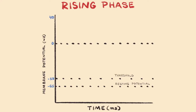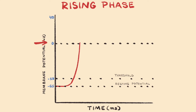The rising phase of the action potential, corresponding with depolarization, begins immediately after the graded potential, or series of graded potentials, reach threshold. During this phase, the membrane potential becomes increasingly less negative in charge, surpasses zero millivolts, and then becomes increasingly positive, up to a charge of about positive 40 millivolts.